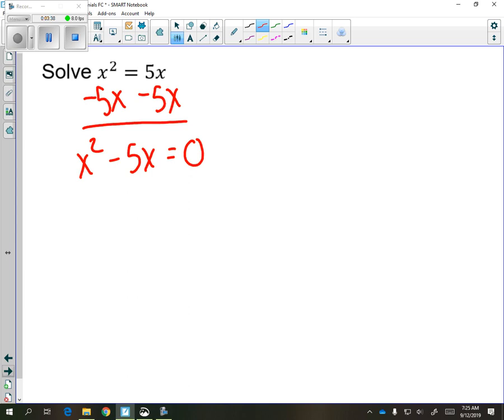We'll notice that we have a GCF of x. And when we pull that out, we're going to get x times x minus 5 equals zero. Again, we're not dropping the equal zero.